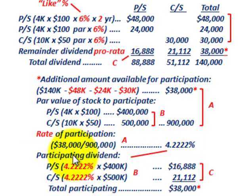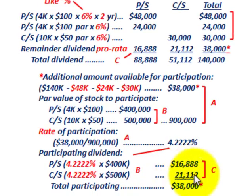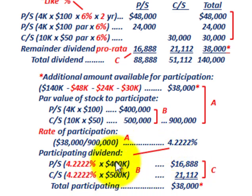Allocating the participating dividend: take the rate of participation times the total par value for each class of stock. Preferred stock total par was $400,000, so preferred gets 4.2222% × $400,000 = $16,888. Common stock total par was $500,000, so common gets 4.2222% × $500,000 = $21,112. Total participating amount allocated equals $38,000.